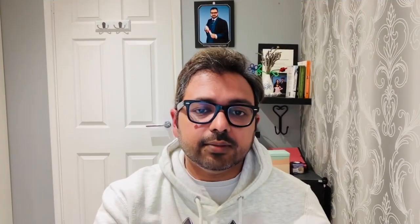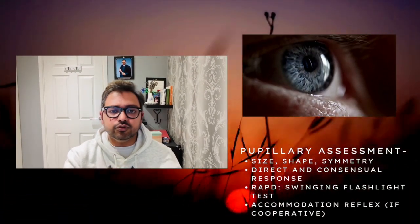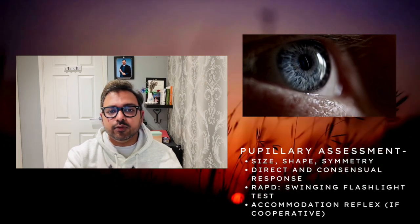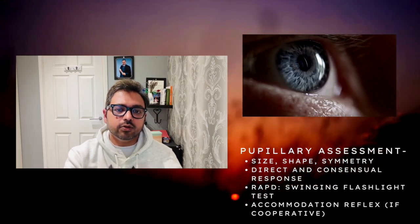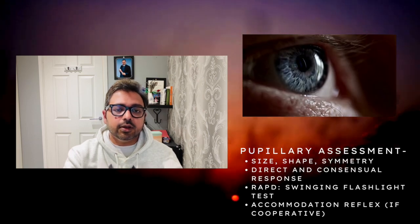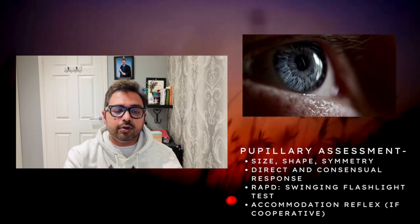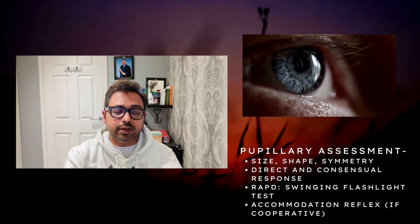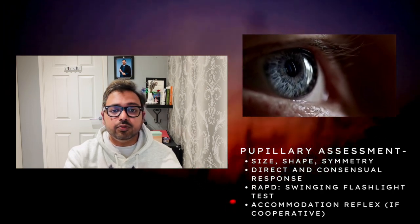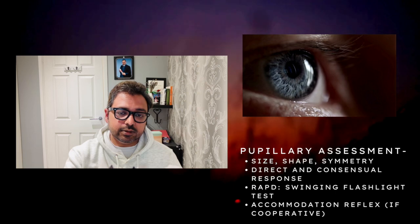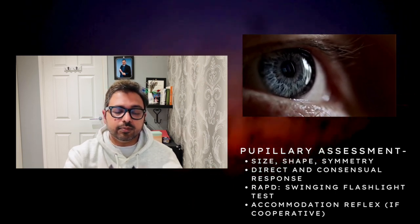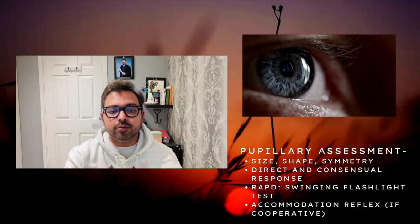For pupillary assessment, first look for the size, shape, and symmetry of the pupil. Then perform direct and consensual response. Then look for the relative afferent pupillary defect (RAPD) by doing the swinging flashlight test — the other name for RAPD is Marcus Gunn pupil. Then perform the accommodation reflex if the child is cooperative.